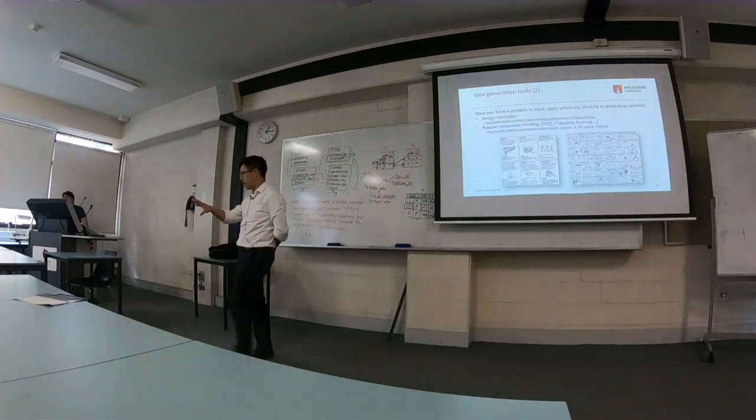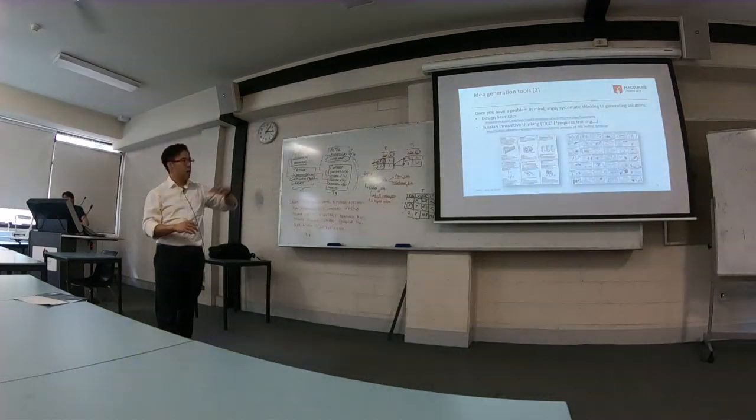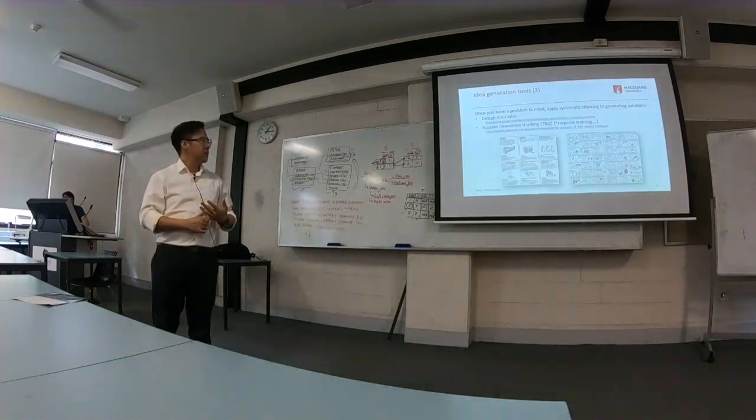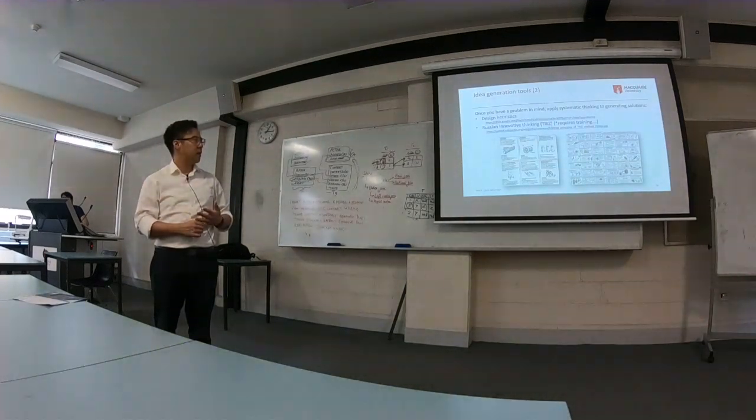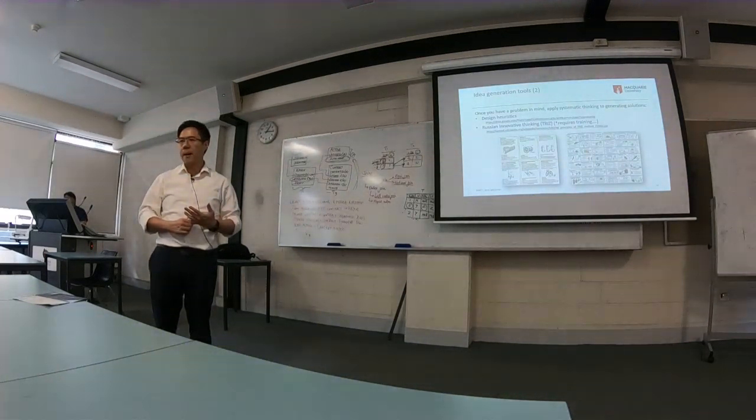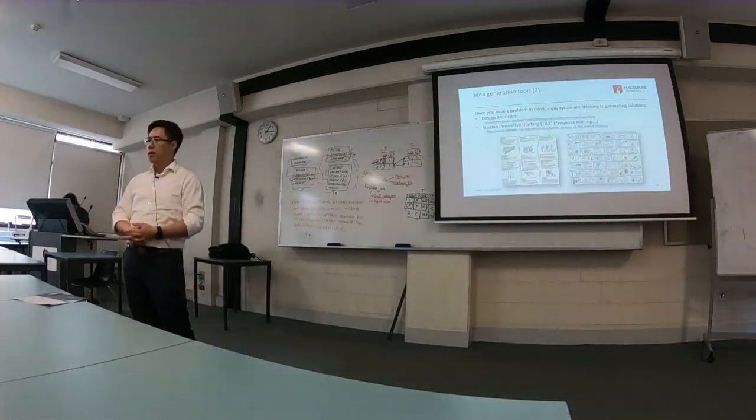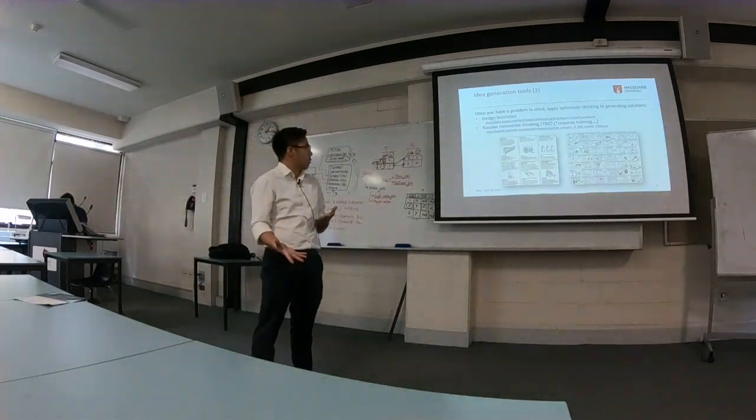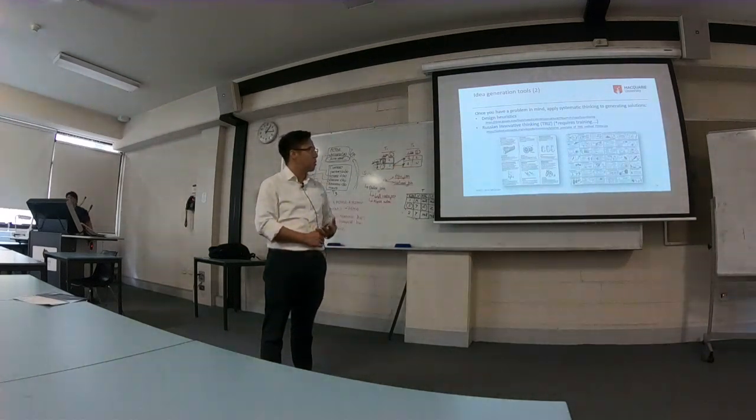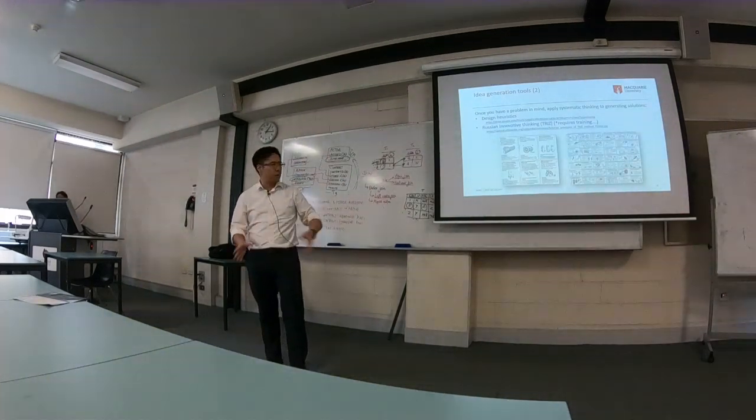There are about 40 rules to design heuristics and I find that particularly useful. The other methodology was designed in Russia back in the Cold War. They went through about 40,000 patents and looked through common themes in what makes a patent or innovative solution a good product, and they distilled that into 40-odd themes.